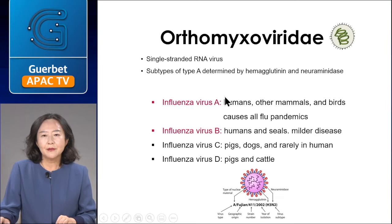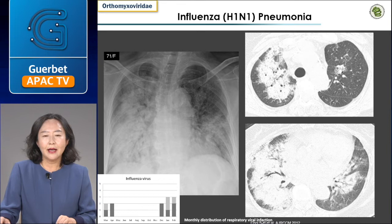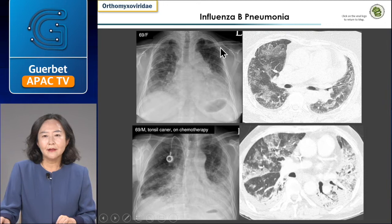Orthomyxoviridae are single-strand RNA viruses with multiple sub-families affecting various species. Among influenza viruses, H1N1 is type A, presenting as ill-defined patchy consolidations along the bronchovascular bundles, very difficult to distinguish from bacterial pneumonia. It is related to outbreaks during winter season, with a one-to-two-day incubation period. Fatal influenza pneumonia can be caused by diffuse alveolar damage with severe interstitial inflammatory cell infiltration. Neuraminidase inhibitors — oseltamivir, so-called Tamiflu — are the available treatment option. These cases show post-influenza B pneumonia with patchy ground-glass opacity and consolidation, sometimes with a small amount of bilateral effusion.